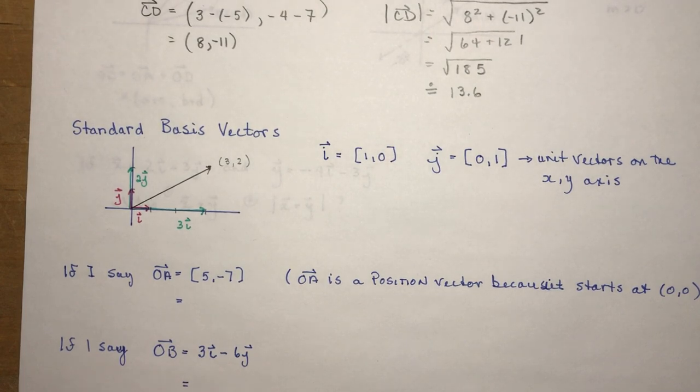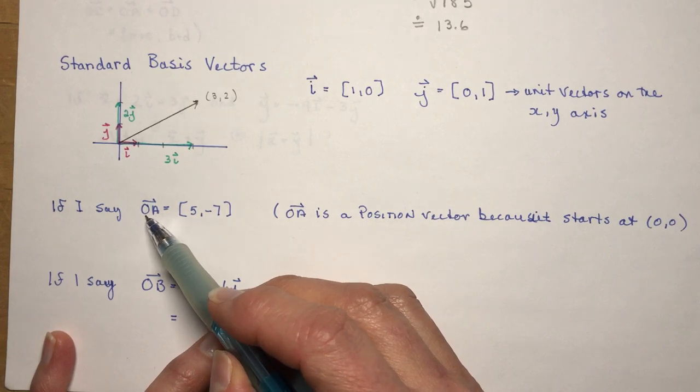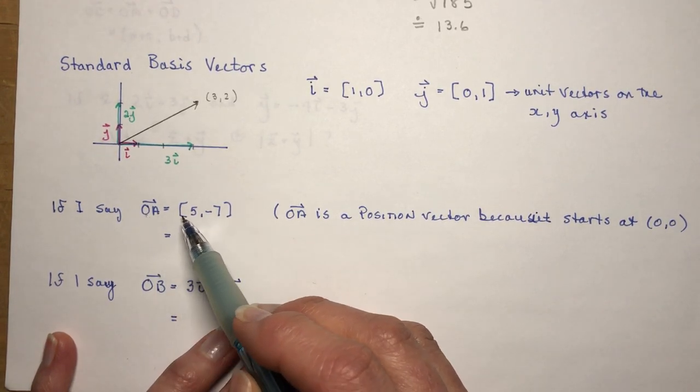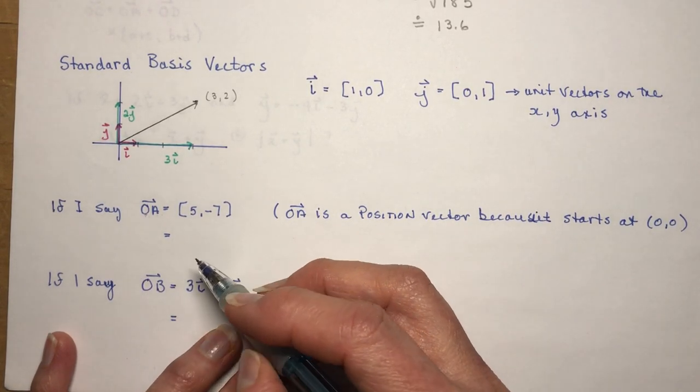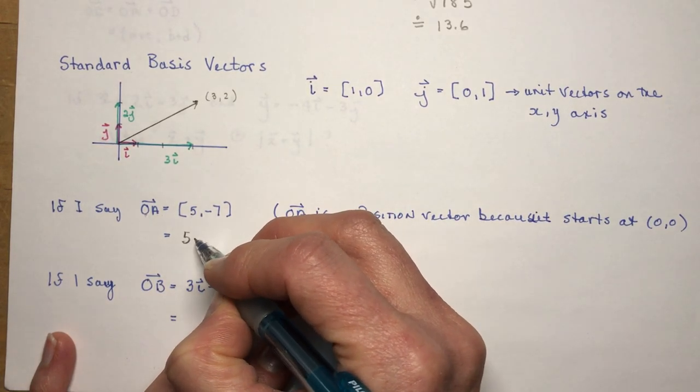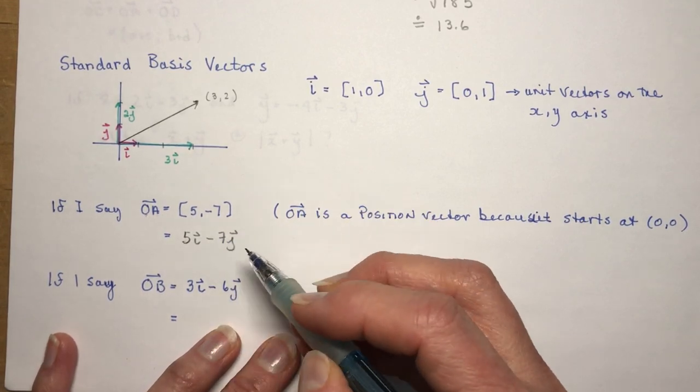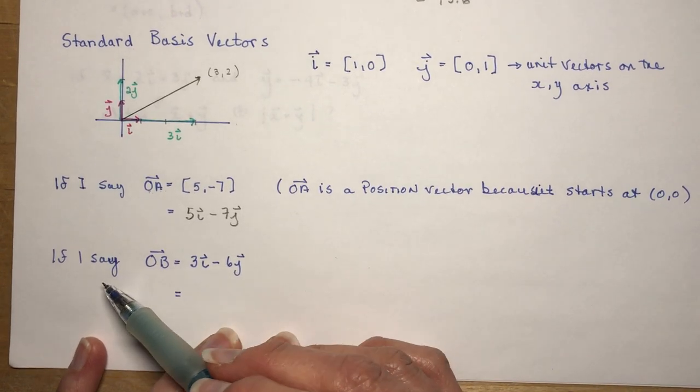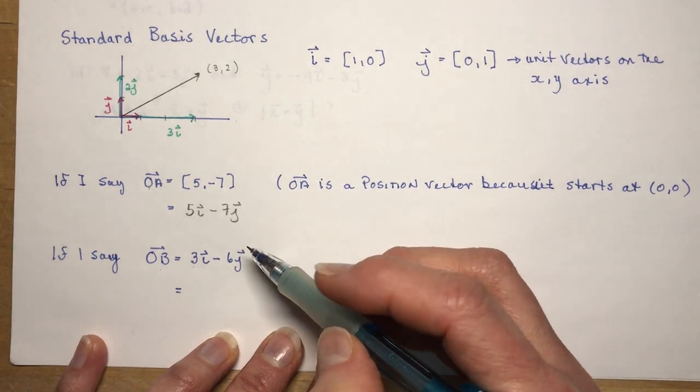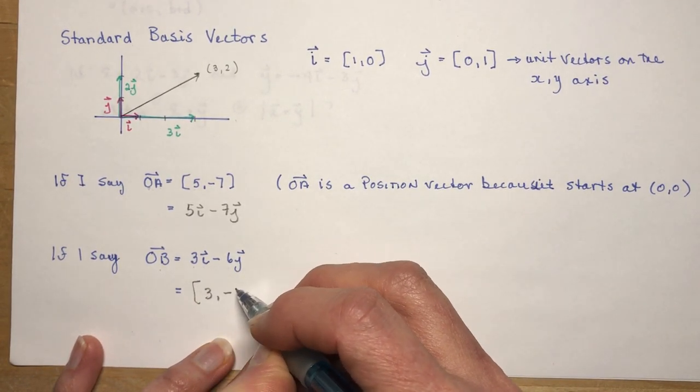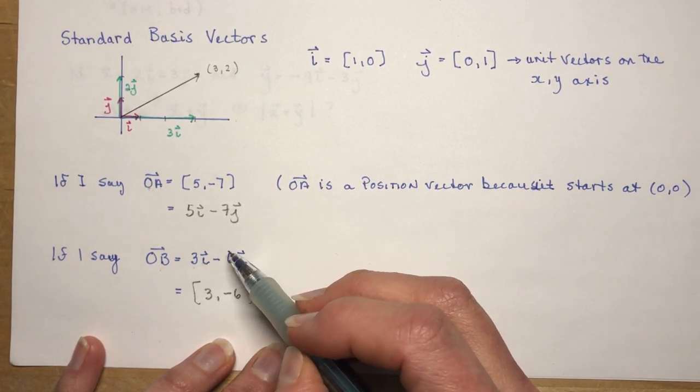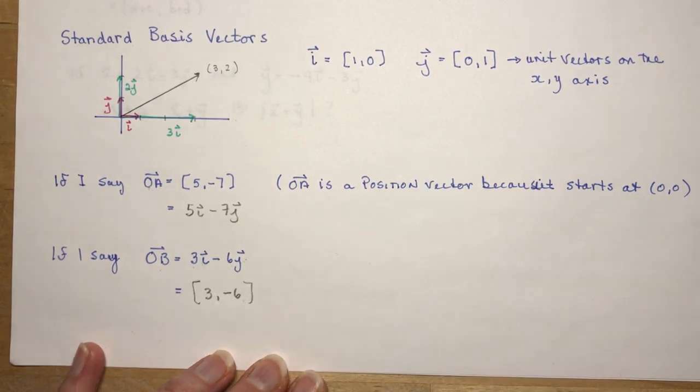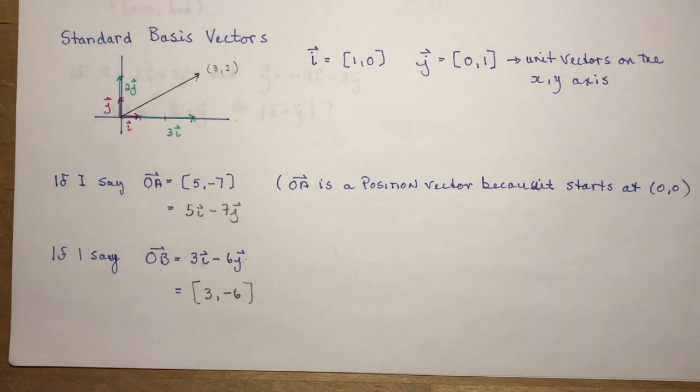So if I said I have OA, and because it says OA, that means it's a position vector already, because the O designates that it's coming from the origin. So if OA is 5 minus 7, and I asked you to write it in basis vectors, you would say, well, that's the same thing as 5i minus 7j. And you don't put it in brackets. It's just telling you directions. You go 5i minus 7j. And conversely, if I give you, if I say vector OB is 3i minus 6j, that's the same as saying vector B is 3 minus 6, because these are just ones. So it's just telling you you're on the x-axis, you're on the y-axis, and this would give you your vector in component form, whereas this is in standard basis form.